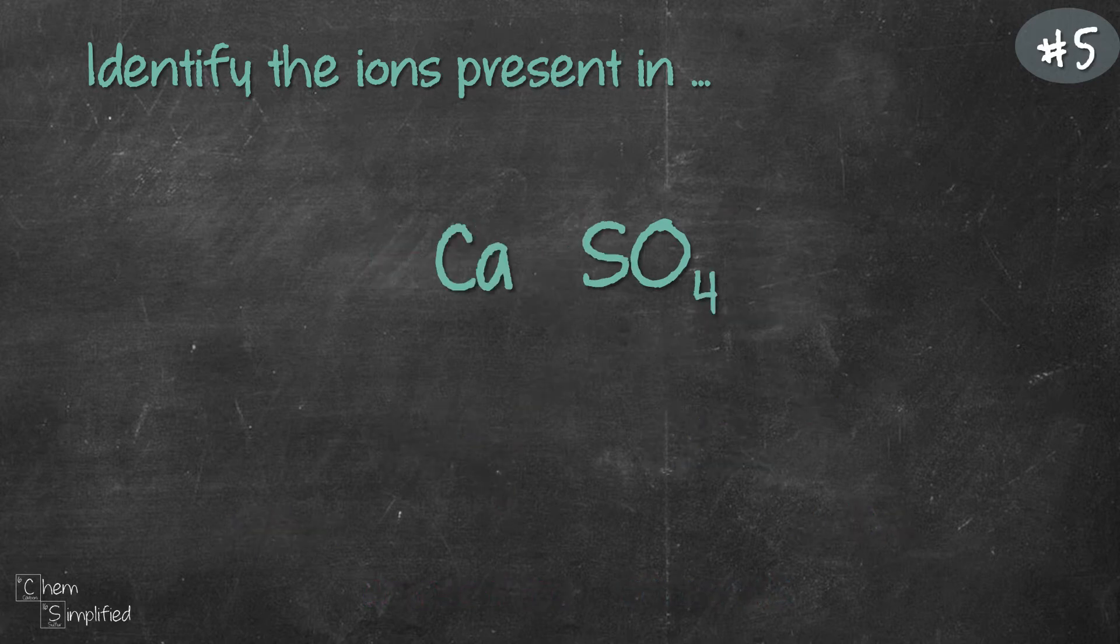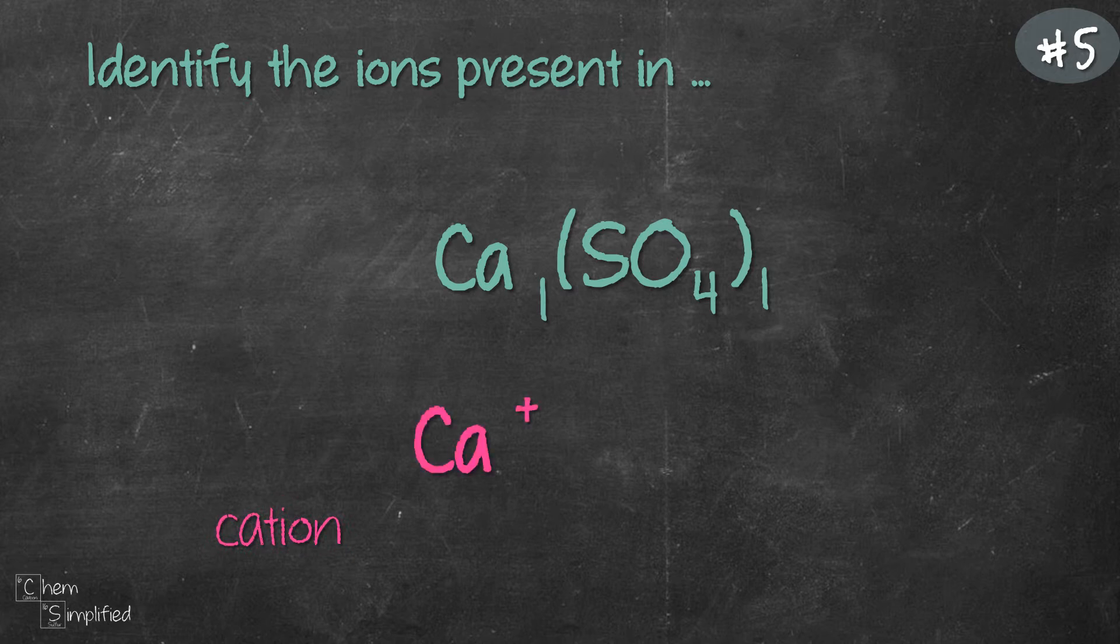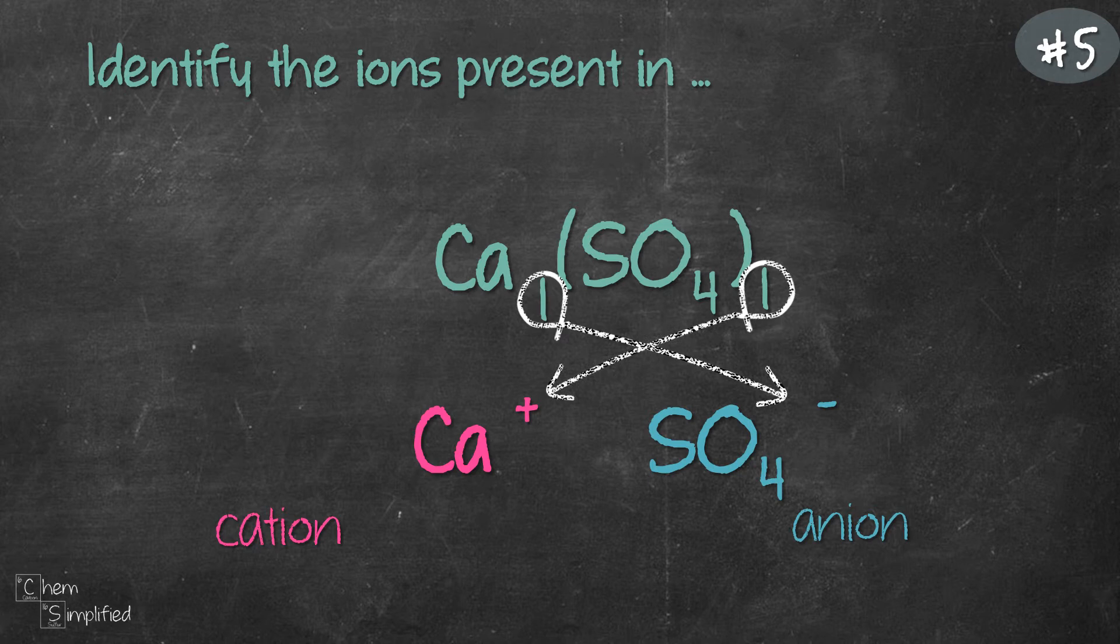Let's move on to our final example, CaSO4. And it looks like we have one Ca and one group of SO4. So we use the crossover method and we get Ca+ and SO4-. Now is this the final answer? Well, let's double check.